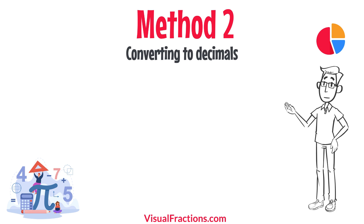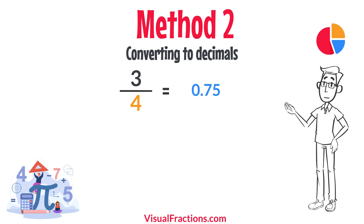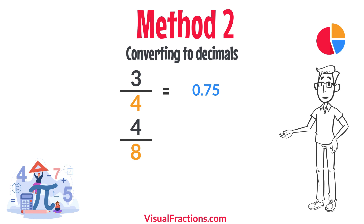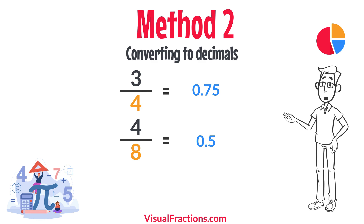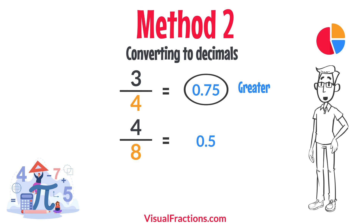For a second method, let's convert each fraction to a decimal. Using a calculator, divide three by four to get 0.75, and divide four by eight to get 0.5. This calculation shows that 0.75 is greater than 0.5, confirming that three quarters is indeed greater than four eighths.